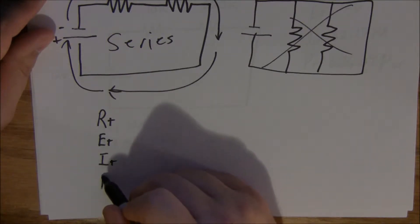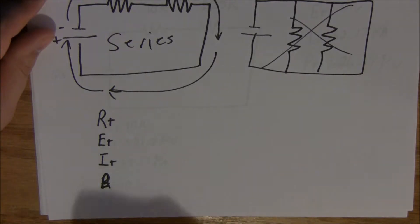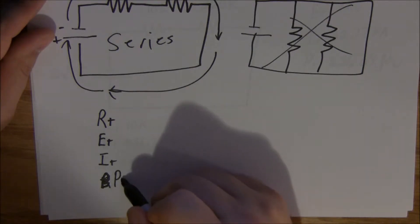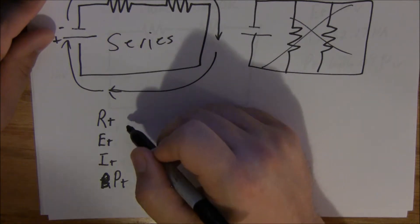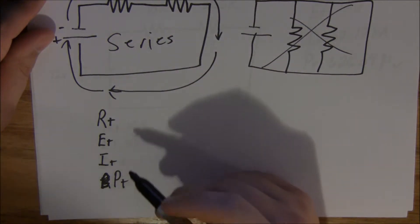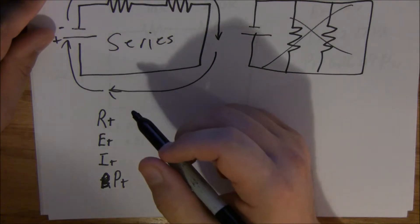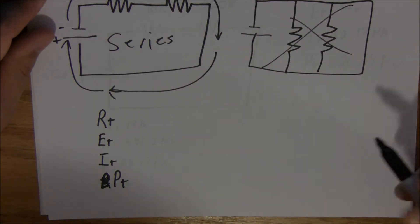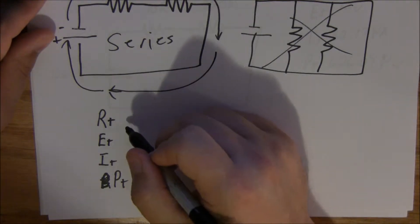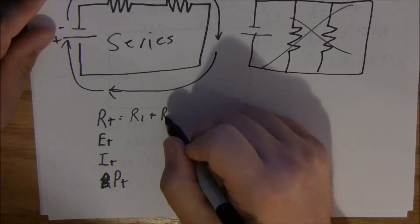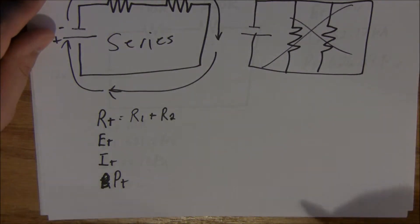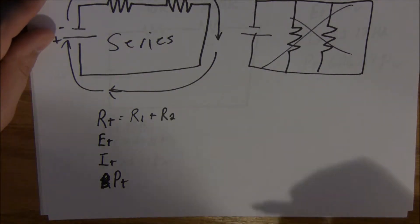And you need to figure out your total wattage — PT. Now resistance, voltage, and power are all the same — it's nothing more than the sum of all your resistors in the circuit. So RT equals R1 plus R2 and so on. It doesn't matter whether you have two or a hundred resistors in series, it's the same thing. Your voltage is the same way — it equals your voltage after the first resistor, E1, plus your voltage after the second resistor, E2, and so on.